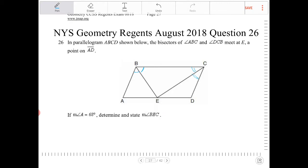Okay, if angle A is 68 degrees, so this is 68 over here, determine and state angle BEC.